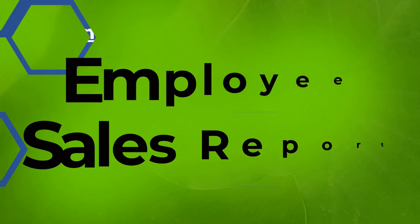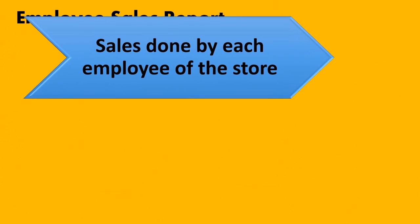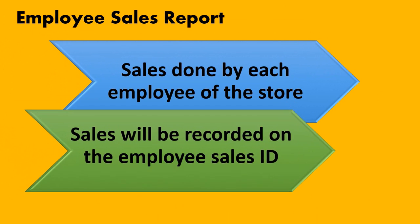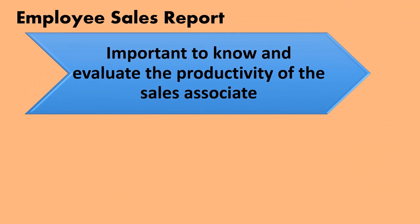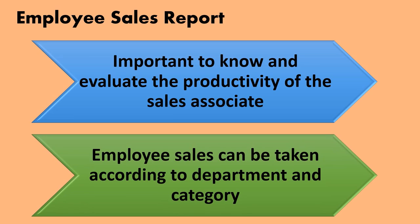The ninth report is the employee sales report. It gives details of the sales done by each and every employee of the store, recorded on their individual sales ID. Through this report, we can understand which employee has done how much sales. This report is very important as it helps evaluate the productivity of each sales associate, and the data can be broken down by department and by category.